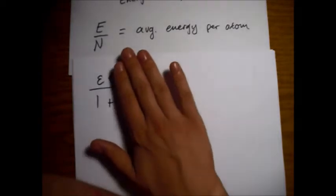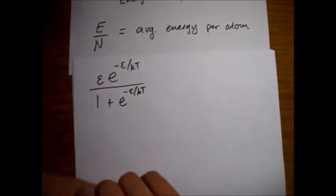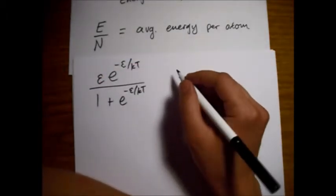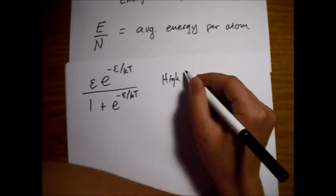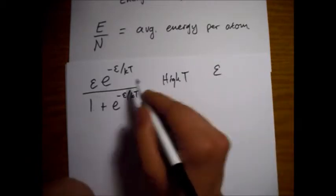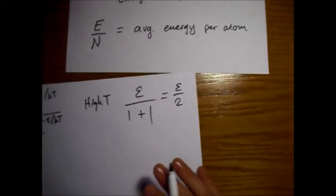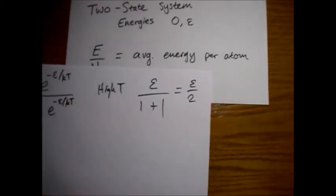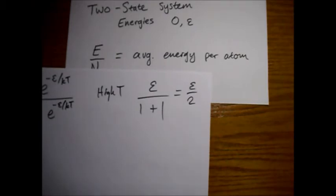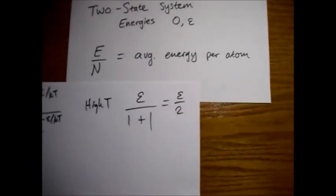When T goes to infinity, these exponential parts go to zero and these become one. So for high T, we get epsilon multiplied by one and then a one plus one here on the bottom, epsilon over two. So the maximum, we have a very high temperature, we're giving it as much energy as it wants to take in thermal equilibrium, and we still end up with a maximum of epsilon over two.